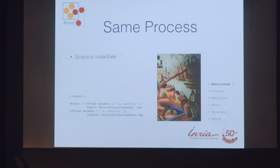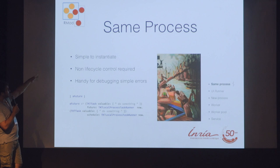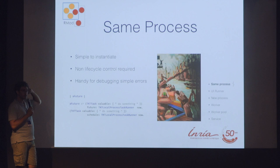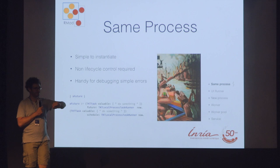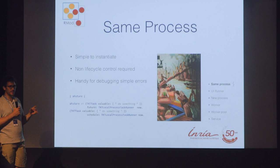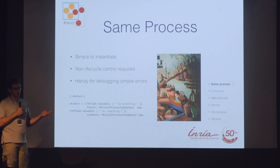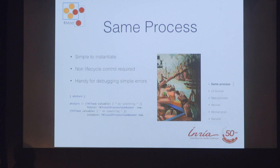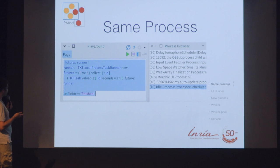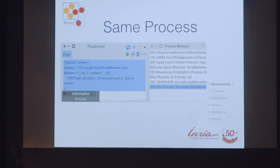We have the same process scheduler runner, which is pretty easy to instantiate. There's no life cycle control required. This runs in the same process as the caller, so there's no such thing as a thread. It's handy for debugging simple errors — if you have a does-not-understand or some type error, something not related with concurrent execution, it would be nice to debug in this mode. The idea is it will only execute the task in the same calling thread.